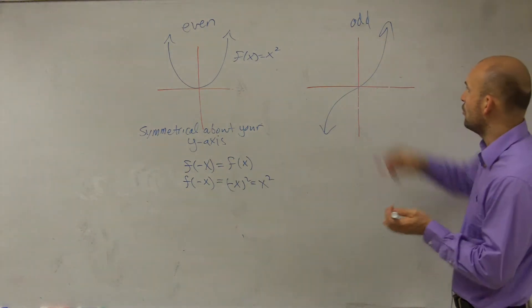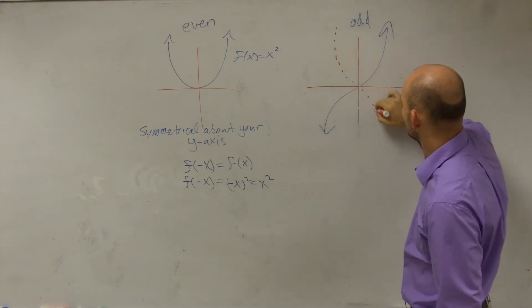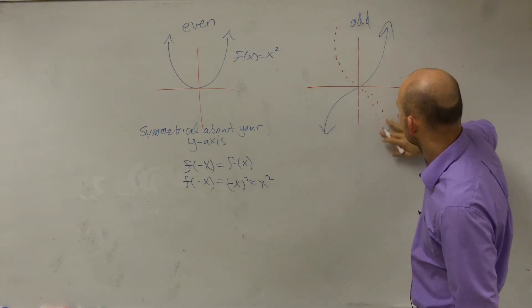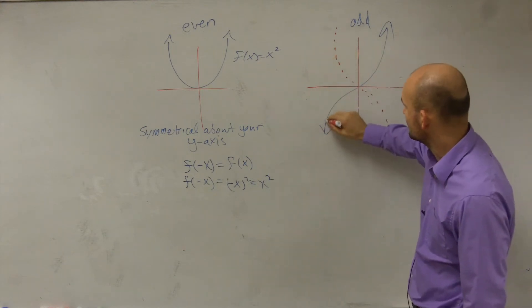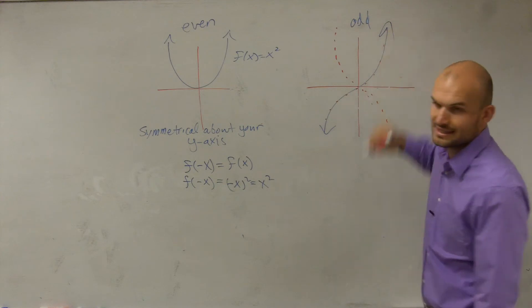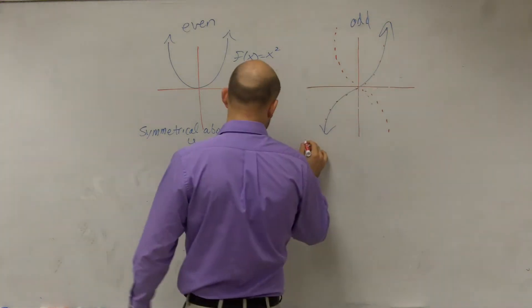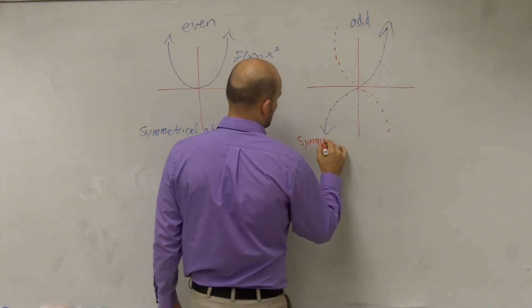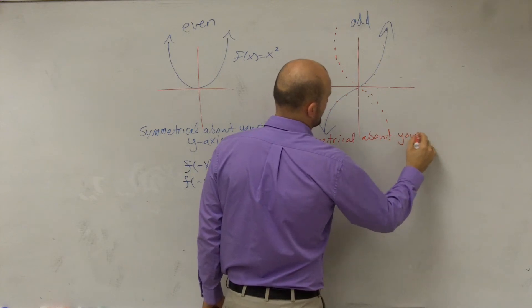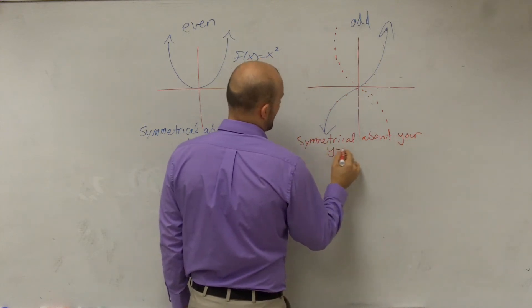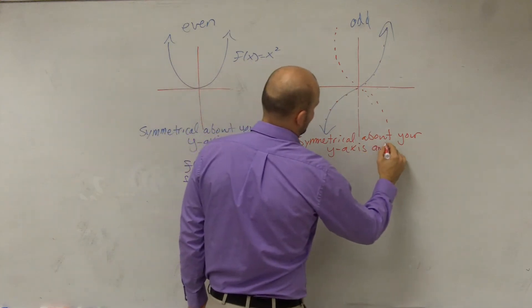So think about it. If I were to flip this over my x-axis, it would look something like this, right? And then if I was to reflect it about my y-axis, I'm going to get the exact same graph back. So all odd functions are symmetrical about your y-axis and x-axis.